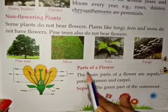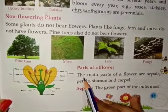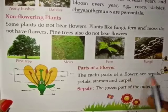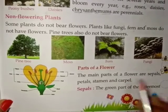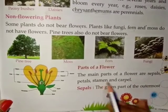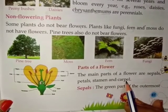Parts of a flower. The main parts of a flower are sepals, petals, stamen, and carpel.